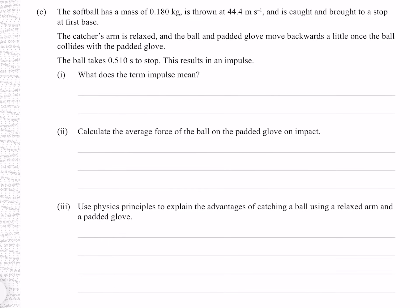The softball has a mass of 0.180 kilograms, is thrown at 44.4 meters per second, and is caught and brought to a stop at first base. The catcher's arm is relaxed and the ball and padded glove move backwards once the ball collides with the padded glove. The ball takes 0.510 seconds to stop, resulting in an impulse. The term impulse means a change in momentum.